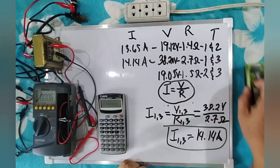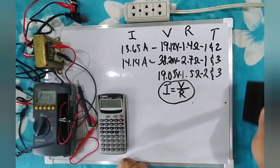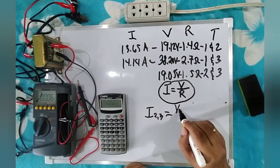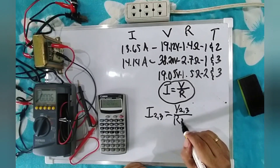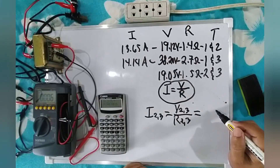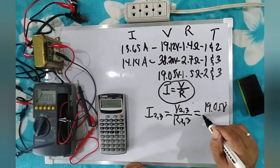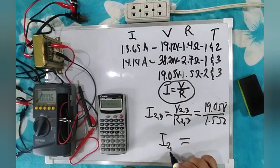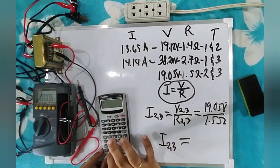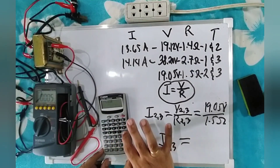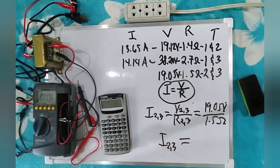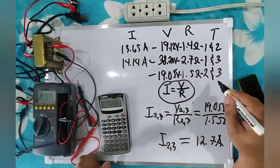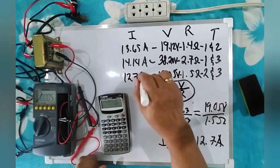Finally, the no-load current of terminal two and three equals the voltage of terminal two and three divided by the resistance of terminal two and three. Substituting: 19.05 volts divided by 1.5 ohms. That equals 12.7 amperes. So the no-load current of terminal two and three is 12.7 amperes.